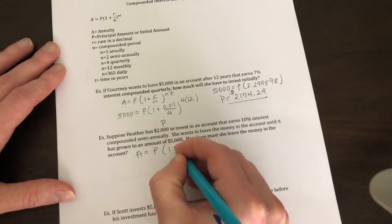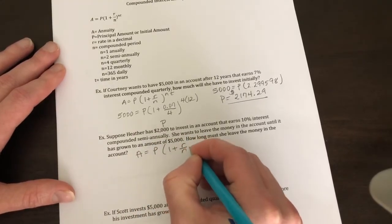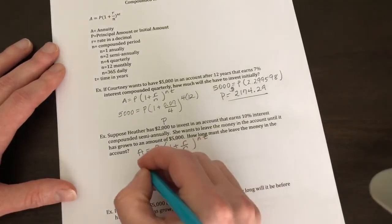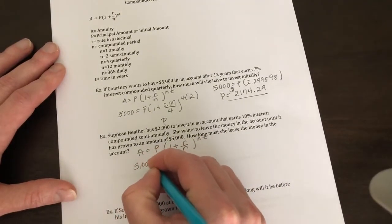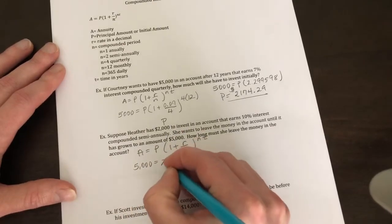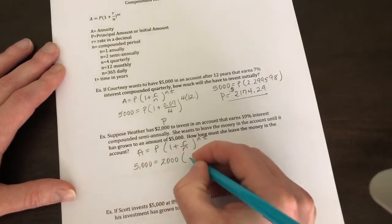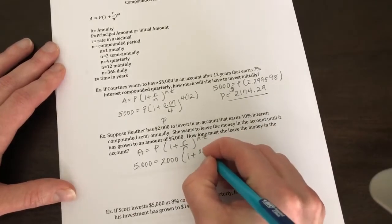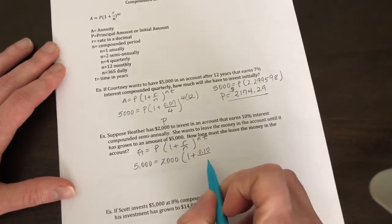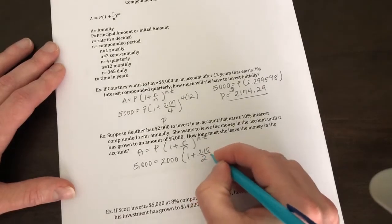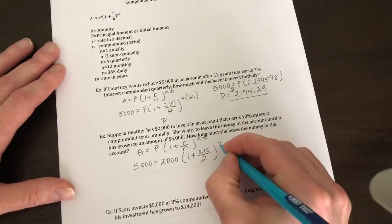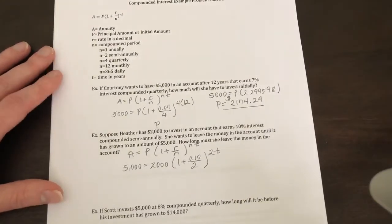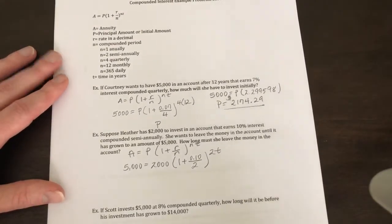So we're going to write our formula: A = P(1 + R/N)^(NT). Your final amount is going to be $5,000, your initial amount is going to be $2,000, your rate is 10%, and it's compounded semi-annually, so your N is equal to 2.